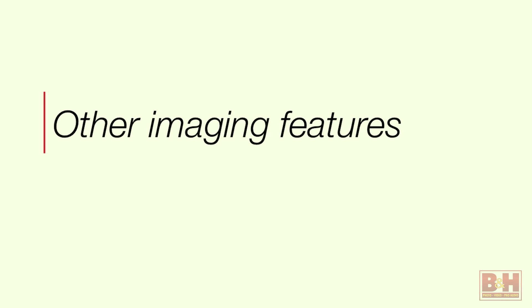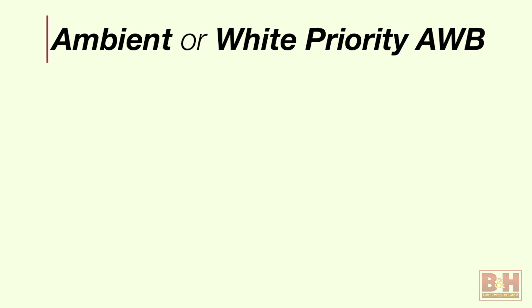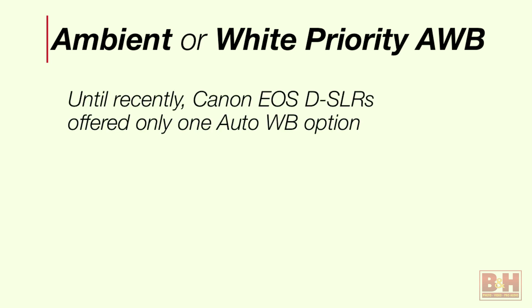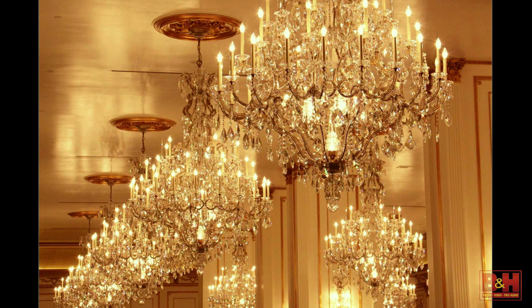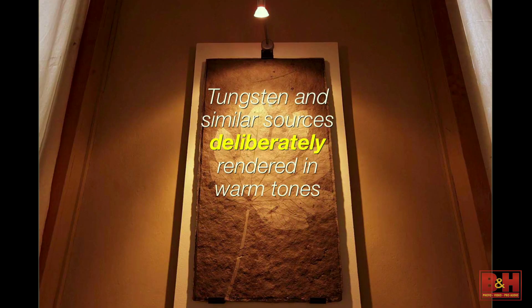In terms of white balance, control is exactly the same as on previous EOS cameras, except with auto white balance you now have two choices. Auto white balance with Canon has always, in tungsten-type lighting, deliberately allowed some warmth to show — the engineers felt this gave an ambient effect. Sometimes that works, sometimes it doesn't. If it didn't work, your choice was to switch to a pure tungsten setting or do a custom white balance.